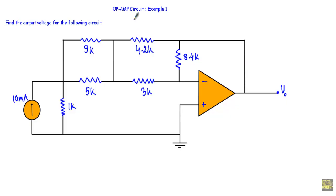I am going to start a lecture series on operational amplifier circuits. In that series I will show you a total of eight circuit examples with operational amplifiers, and this is the first example. Here we have to find the output voltage for this circuit — specifically, we have to calculate the output voltage from the output terminal to the ground terminal.